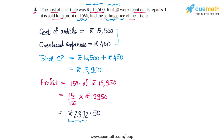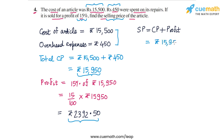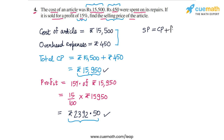Finally, we can find the selling price of the article. The selling price equals the cost price plus the profit. The total cost price is rupees 15,950, and the profit on this is rupees 2,392 and 50 paise.